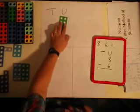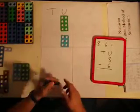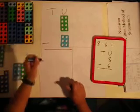So we use that with Numicon. 8 in the units column and take away 6 again in the units column.